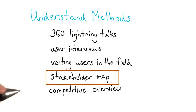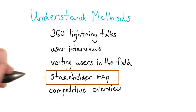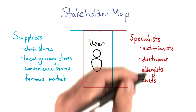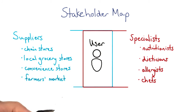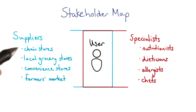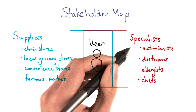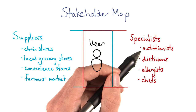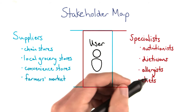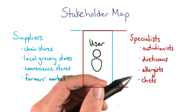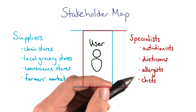A stakeholder map is another necessity that can help you think about all the players related to your business or your industry. For example, the stakeholder map for the SuperDuper shopping app would look like this. Notice that this map includes internal stakeholders, such as the user, and external stakeholders, like the suppliers and specialists. You could imagine building up particular features from recommendations of a nutritionist or allergist. These specialists might play a role in recommending foods to particular users based on their dietary restrictions, their dietary goals, or their cooking habits.